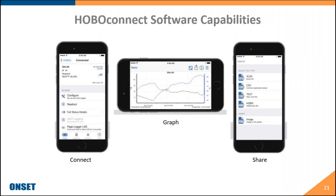Here are screenshots of our Hobo Connect software. The left-hand side shows the connection screen where you can configure the logger, read out data, and page the logger — pressing the page button sets off an alarm for a few minutes to help you find it. Within the software you can view data in line graph form and export it as a PDF. You can also share data files via XLS, CSV, text file, or a Hobo data file. CSV and XLS can be imported into Excel or any compatible program, and the Hobo file can be imported into our HoboWare software for data analysis.